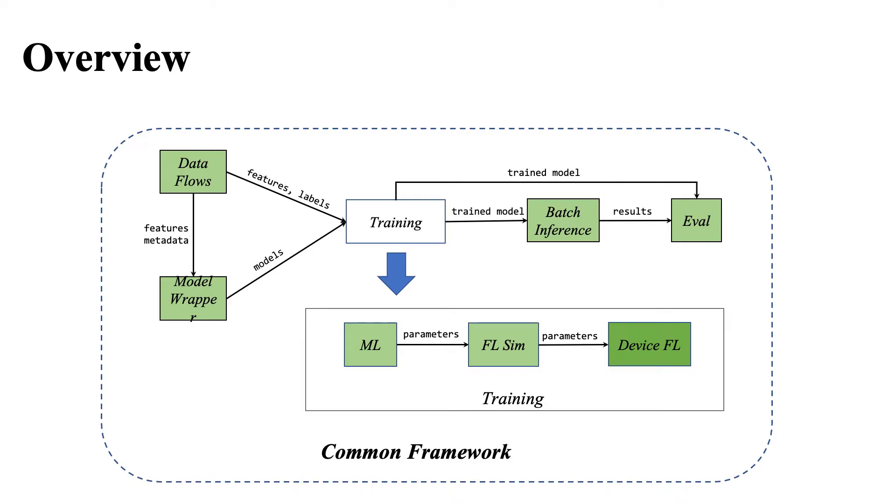We apply batch inference variation on the trained model in the training process. There are three different training steps, as I mentioned in the previous slides. We create ML Trainer for the first step, FL Simulator for the second step, and the Device Trainer to train the model on users' devices. No matter what a trainer we use, we can use this model wrapper mechanism, as I described just now, to wrap or de-wrap the model for different purposes, like inference, evaluation, or even model deployment.